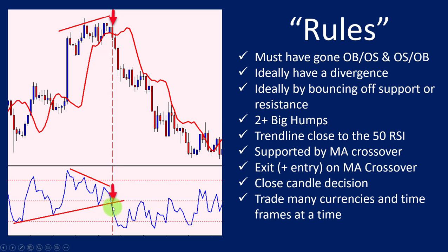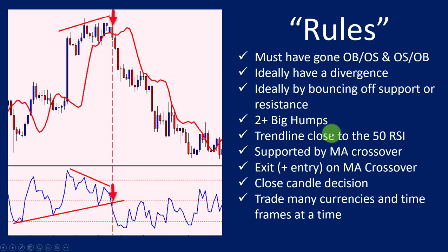That trend line violation is the first main signal, but there are other things that come before it. If you look at the RSI here, it went oversold, then overbought, then oversold and overbought again. After that, it never went overbought again. So you take signals when the RSI has gone overbought and oversold — or oversold and overbought — recently. I call these rules, but in brackets, because not all of them need to be met 100%. Once you've traded this system a while, you can be flexible in certain areas.